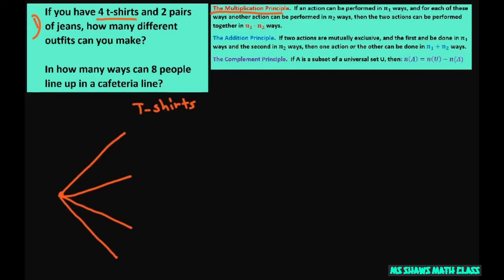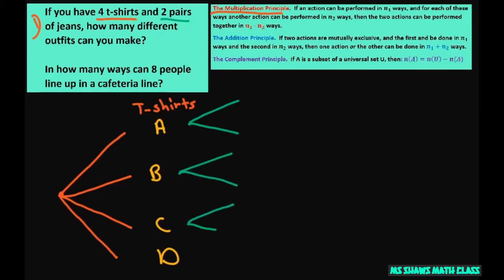Since we have four different t-shirts, we can call them a, b, c, and d. Now let's draw the jeans. We have two pairs of jeans, so let's draw two branches from each of our t-shirts. By the way, the a, b, c, d is called the leaves. We have two pairs of jeans, so the choices are first pair, second pair — repeated for each t-shirt branch.